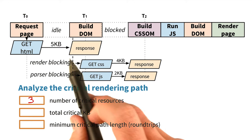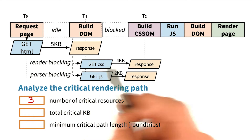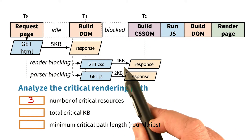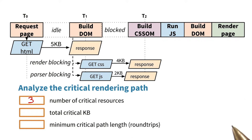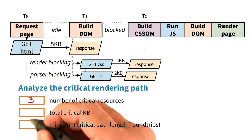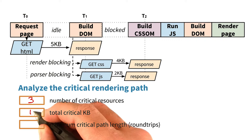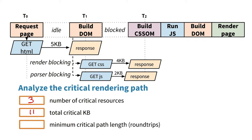Total critical bytes: we've got five kilobytes for HTML, four for CSS, and two for JavaScript. So that's going to be 11 total kilobytes.